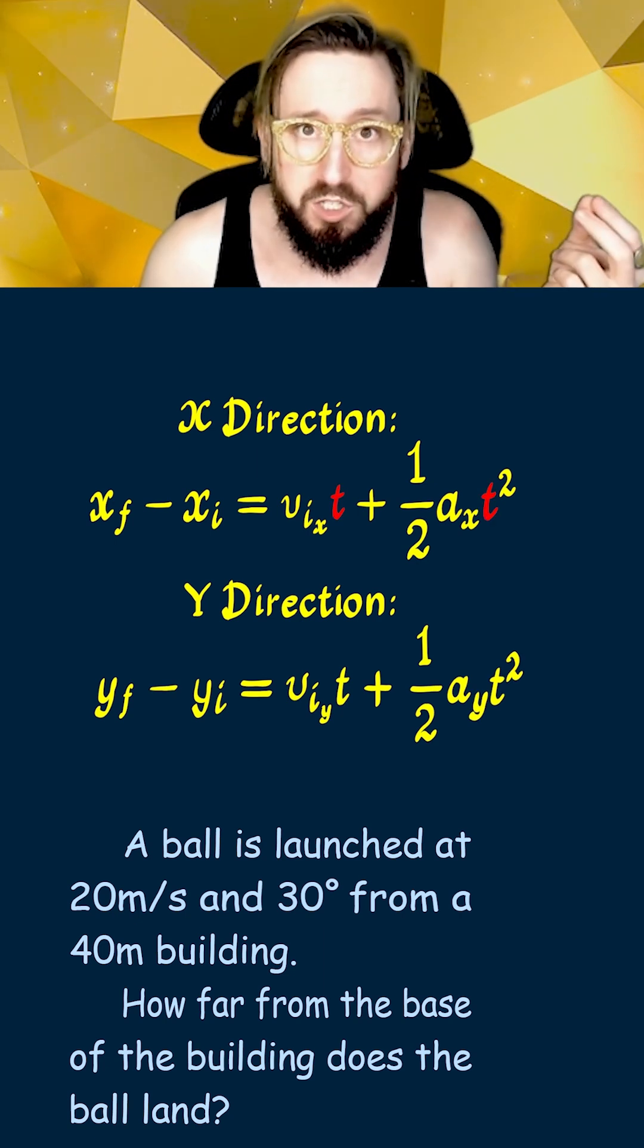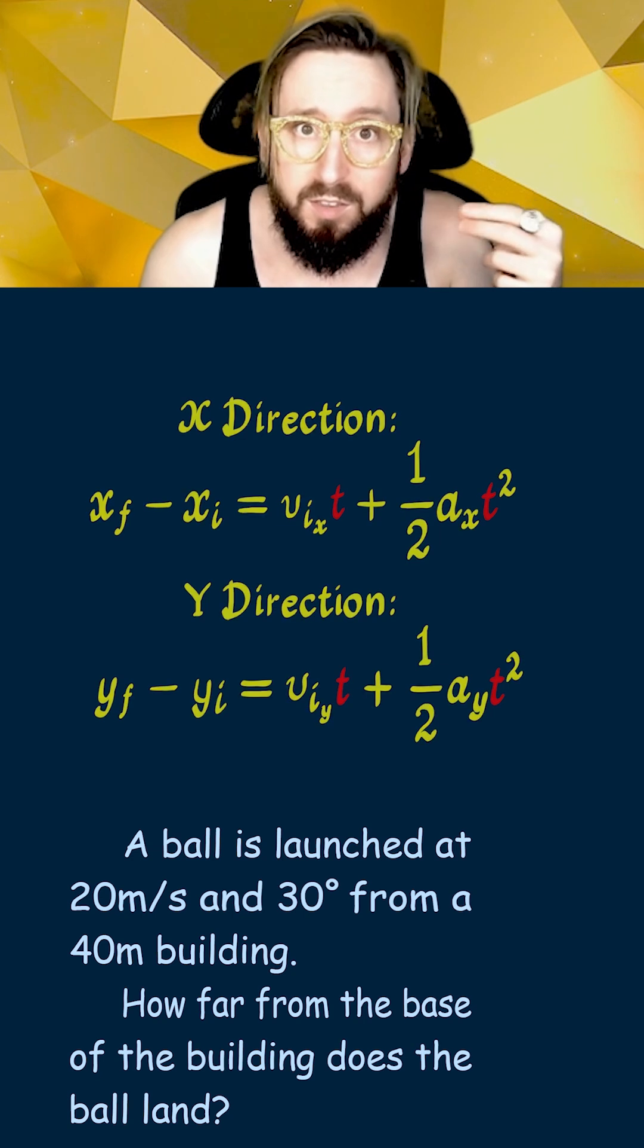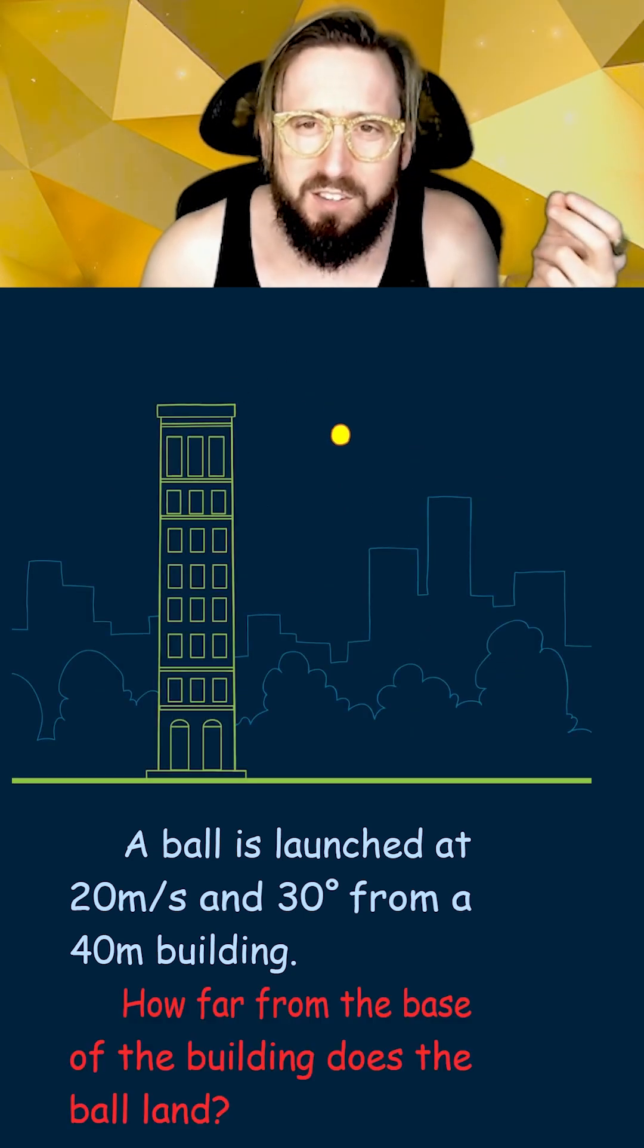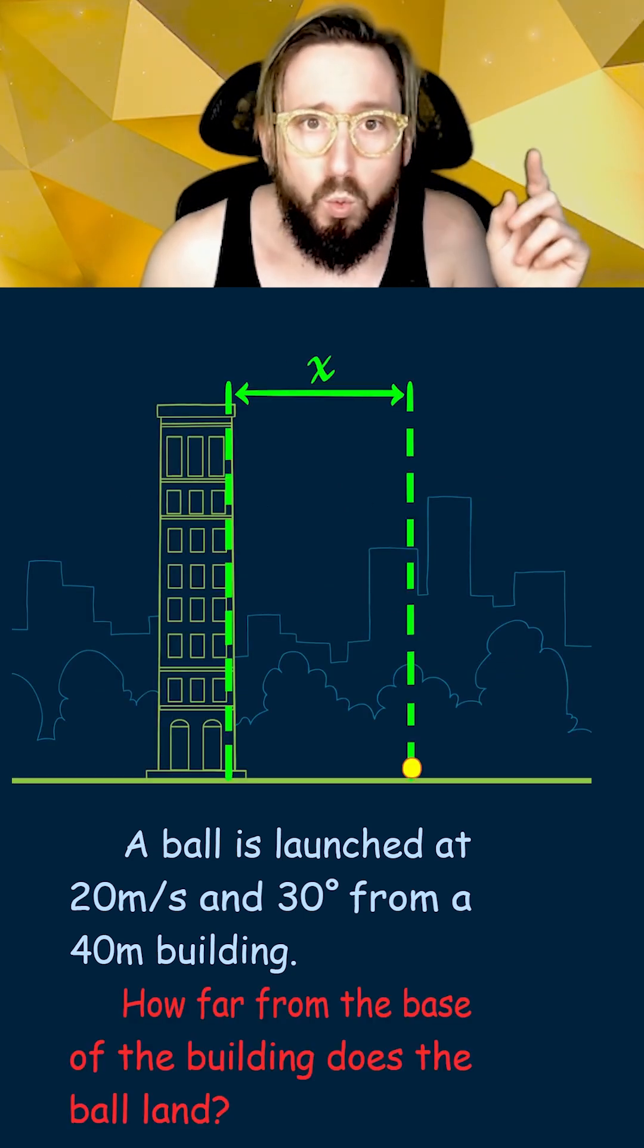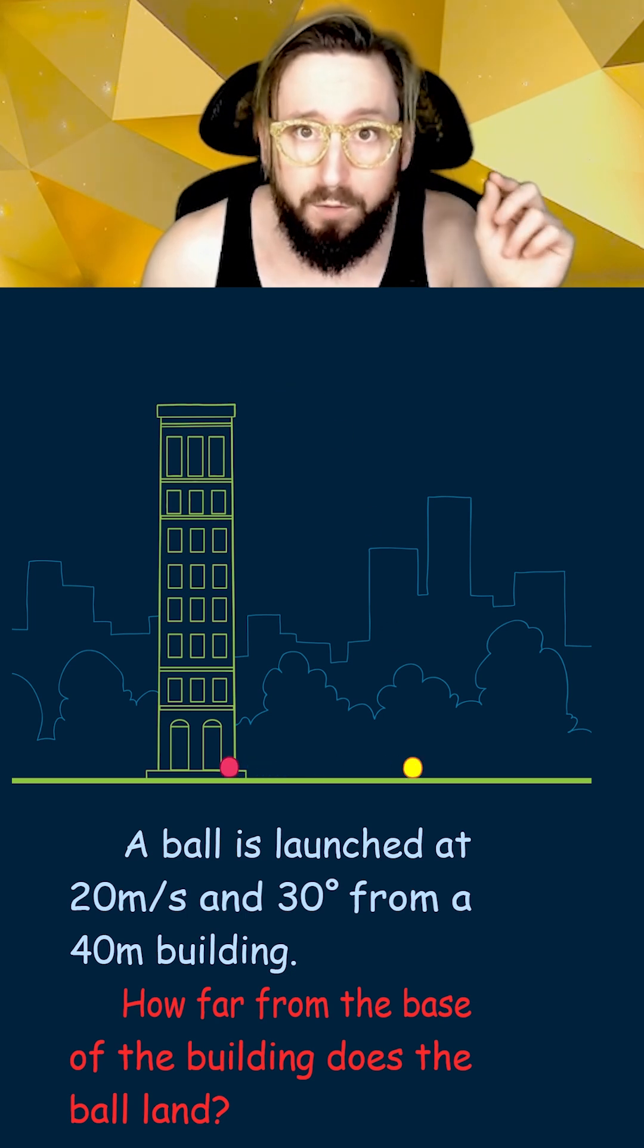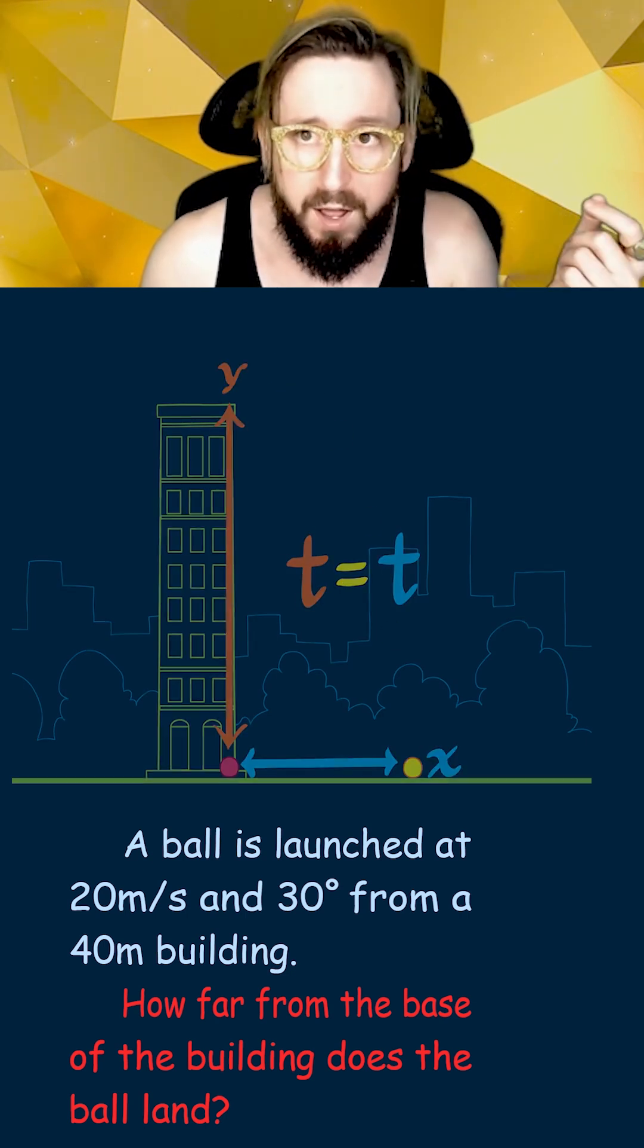Then you solve for the time t in one direction and plug it into the other one. In this case, we're looking for the distance the ball travels in the x direction, which will be related to the time it takes for the ball to fall in the y direction, from the top of the building to the ground.